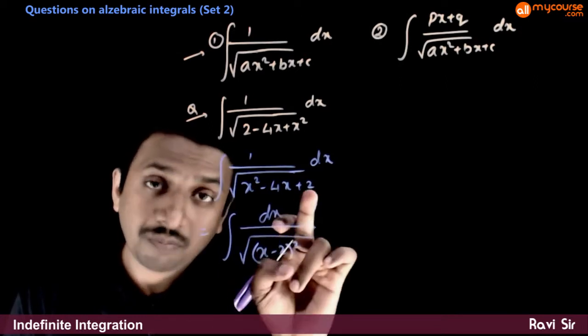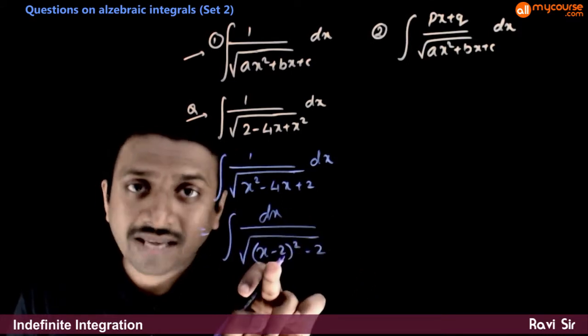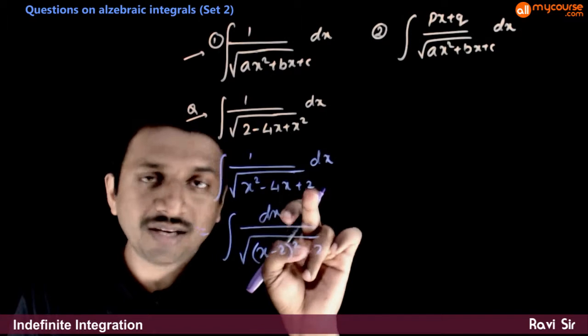So, you have a plus 4 here, but you need a plus 2. So, you have to subtract a 2. x square minus 4x plus 4 minus 2 is plus 2.